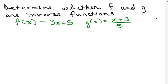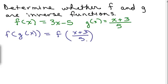So now we're determining whether f and g are inverses for these two functions. So we'll do the same thing. Let's compute f of g of x, and if we get x, then we know they're inverse functions. So f of g of x is f of x plus 3 over 5 because that's what g of x is. And now I'm going to plug in x plus 3 over 5 where I see an x into this function, into f. So that's going to be 3 times x plus 3 over 5 minus 5.